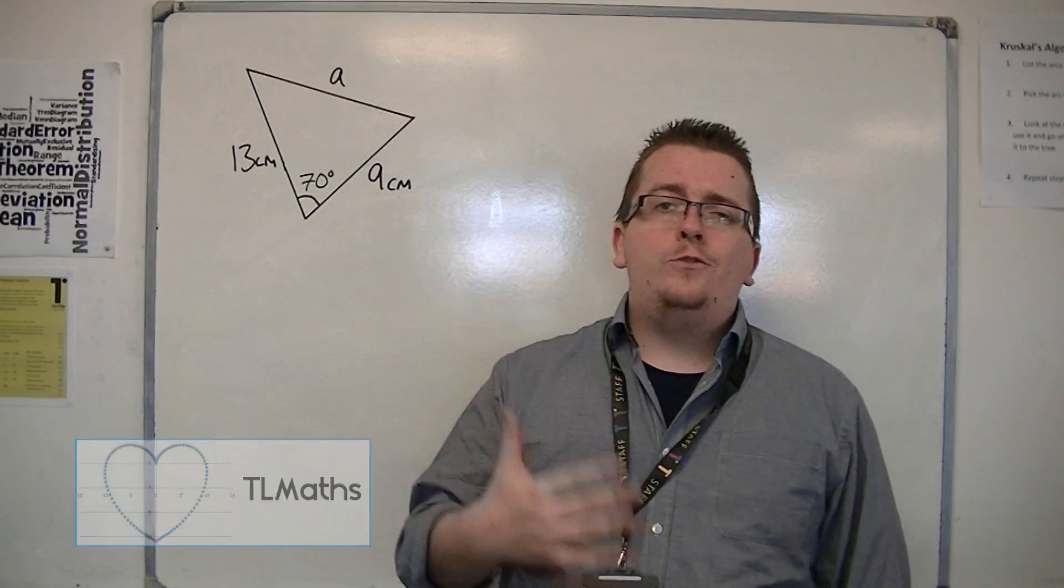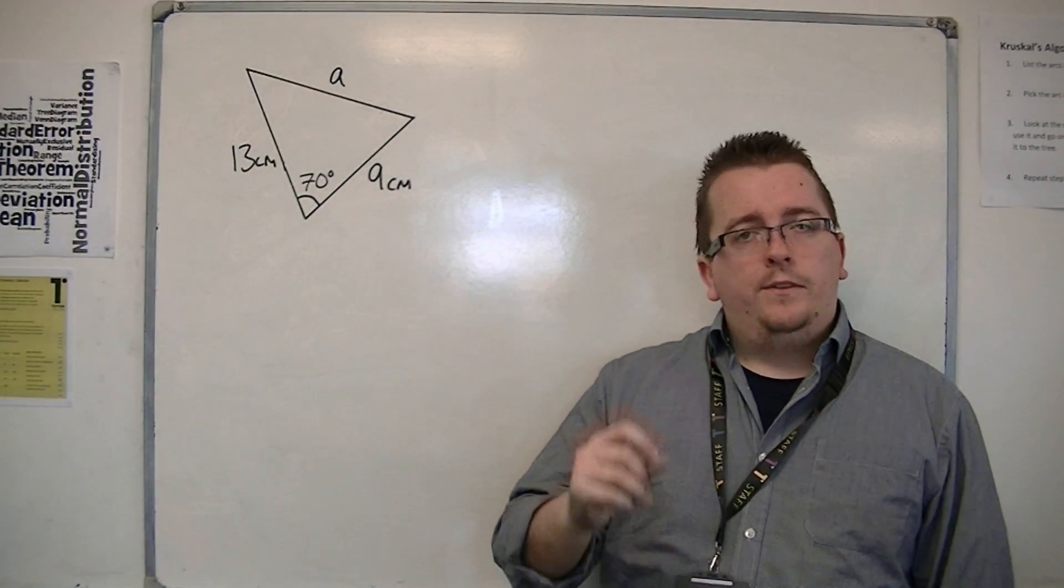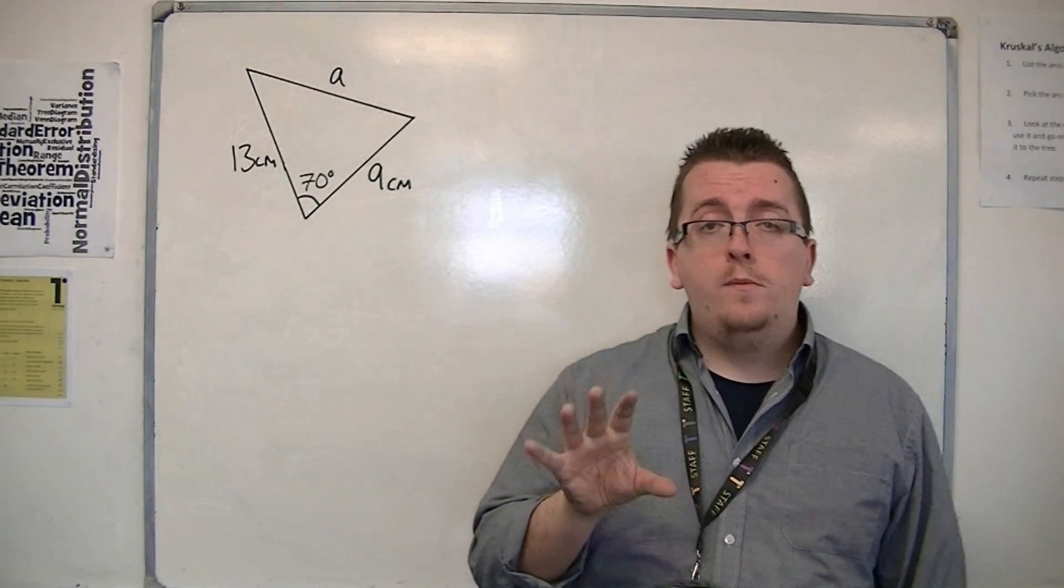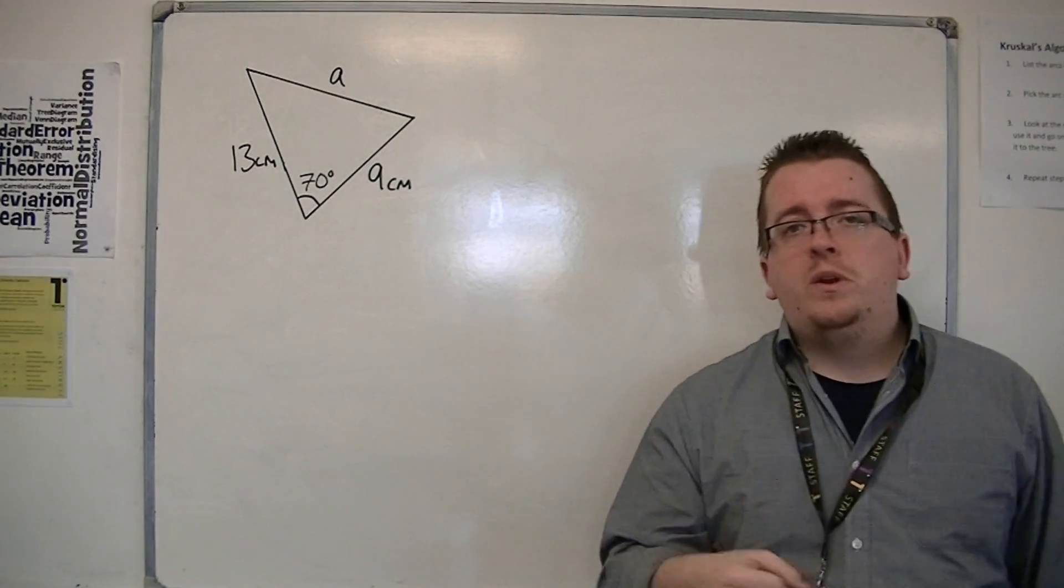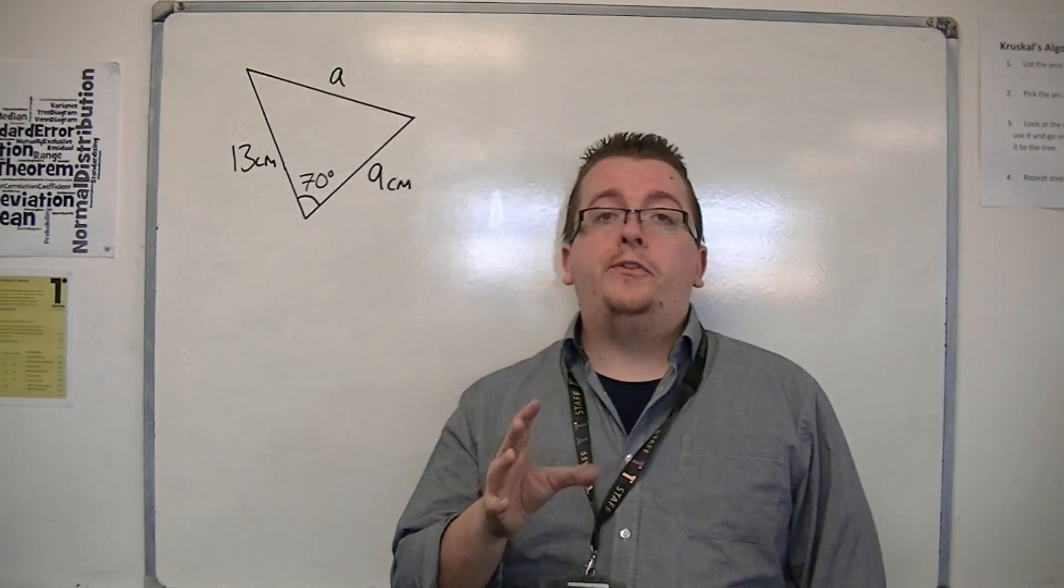So in the previous video I showed you how we can use the sine rule to find either a missing side or a missing angle. In this video we're going to be looking at the cosine rule to do the same.